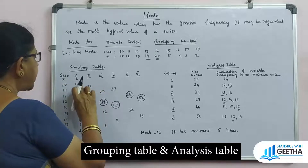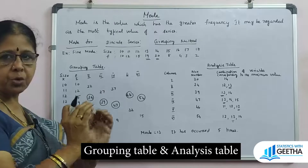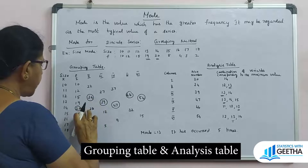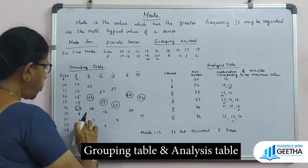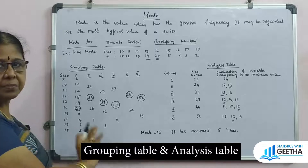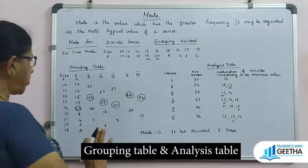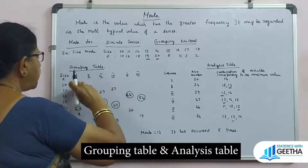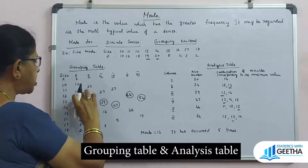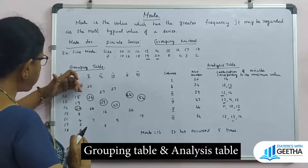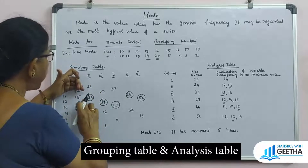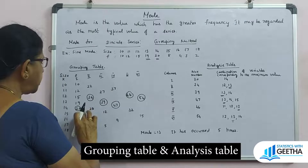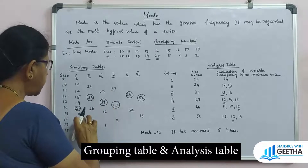For column 3, we leave the first frequency and add the remaining frequencies two by two: 12 plus 15 is 27, 19 plus 20 is 39, 8 plus 4 is 12, 3 plus 2 is 5. For column 4, we add frequencies three by three: 10 plus 12 plus 15 is 37, 19 plus 20 plus 8 is 47, 4 plus 3 plus 2 is 9.